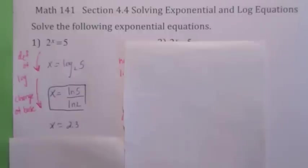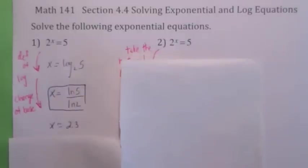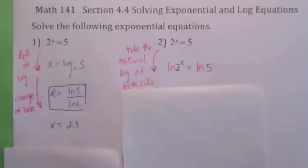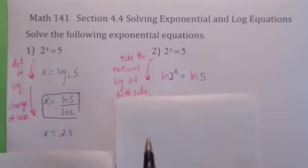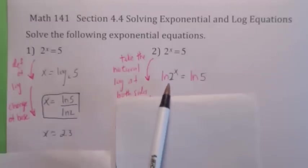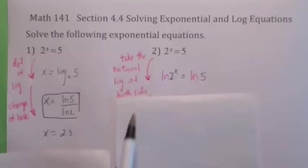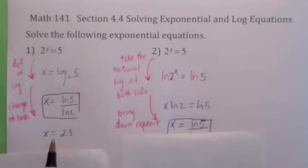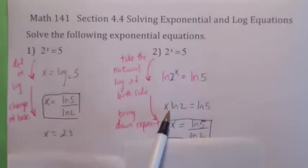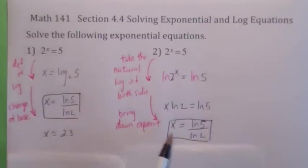I'm going to show you what I think is a better way, because there are certain types of exponential equations you just can't solve using the definition of log. Instead, we're going to take the natural log of both sides. If two numbers are equal, you can take the natural log of both. Remember the rule that says if you have a log of something to a power, you can bring down the exponent. So take the natural log of both sides, bring down the exponent, and divide by natural log of 2. There's your answer.